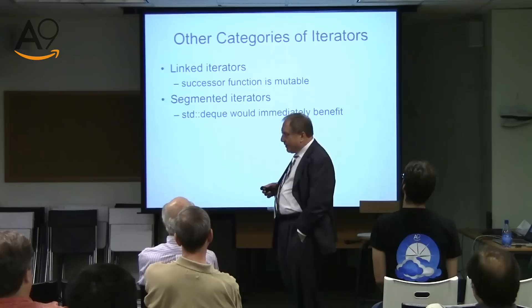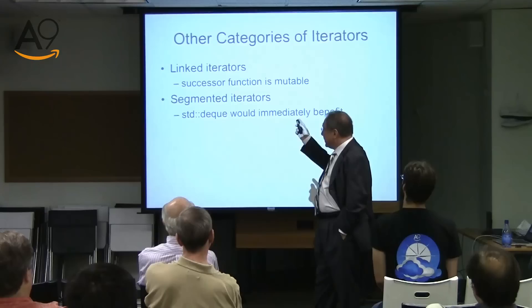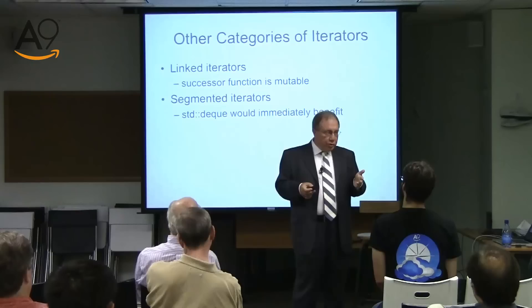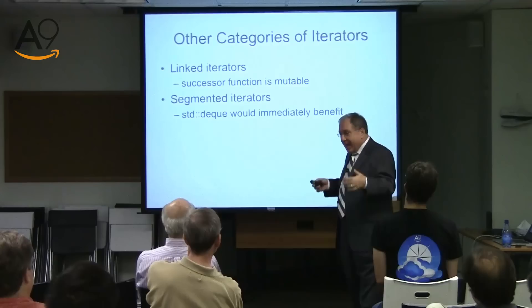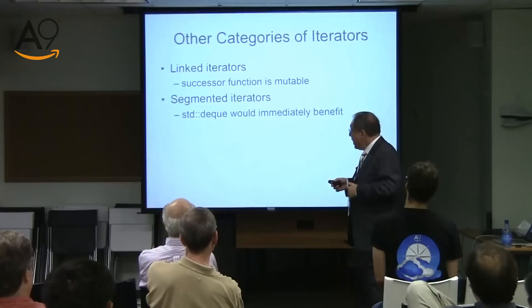For example, one elaborated very carefully in EOP — Elements of Programming — is the notion of linked iterators. These are iterators which allow successor to be mutable. There are data structures like singly linked lists where you could change a successor: today Jack points to Ryan, then he gets tired and starts pointing to Paul — he changes his successor. Those of you who used Lisp know this as set-cdr; in Scheme it's called set-cdr!. It's a well-understood iteration, and you could have a very elegant theory describing it.